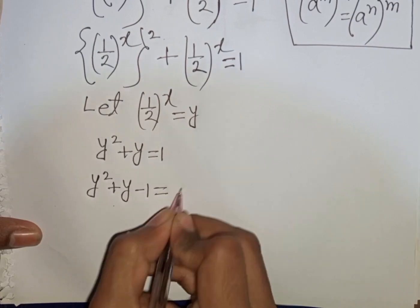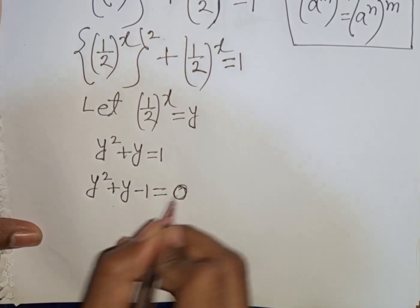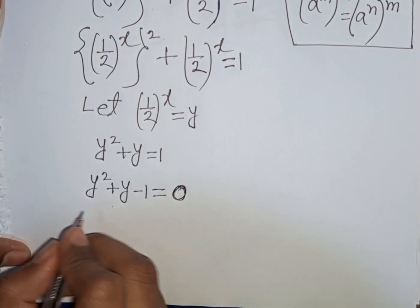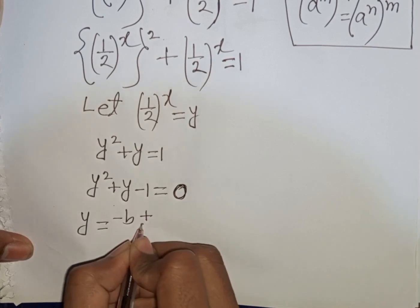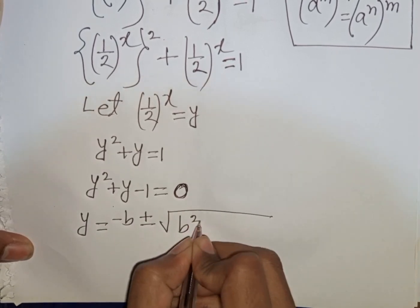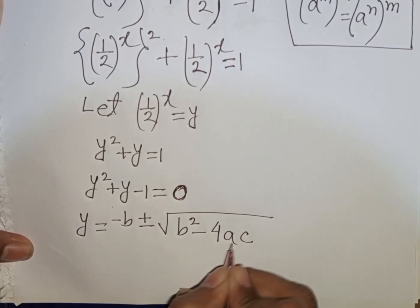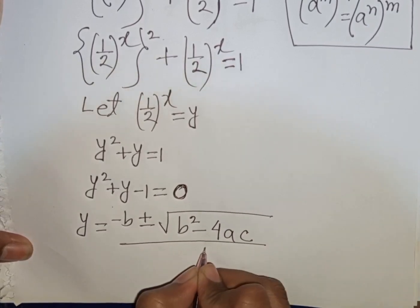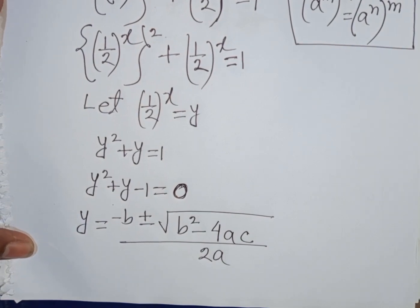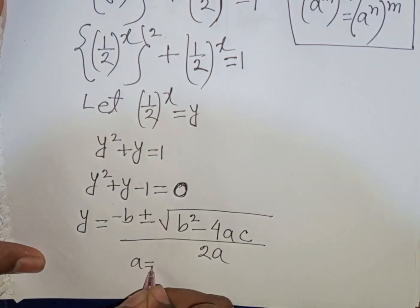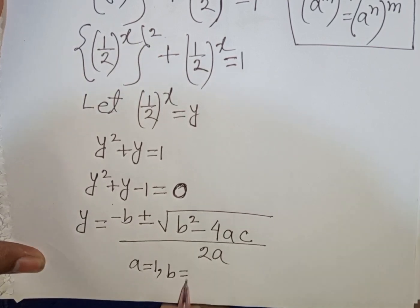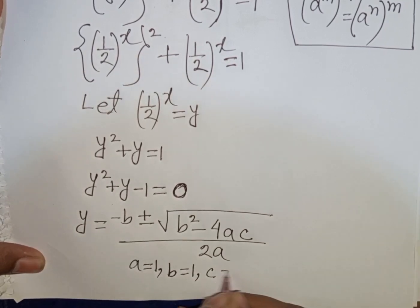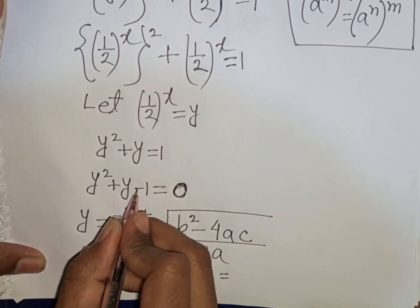We rewrite as Y² + Y - 1 = 0, moving the 1 to the left side. Now we apply the quadratic formula: Y = (-B ± √(B² - 4AC)) / 2A. Here A = 1, B = 1, and C = -1.